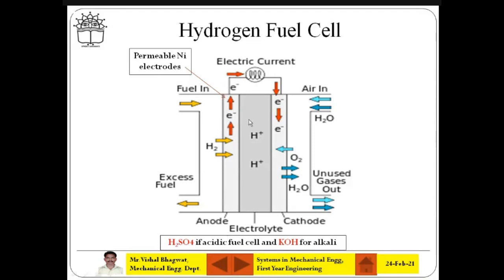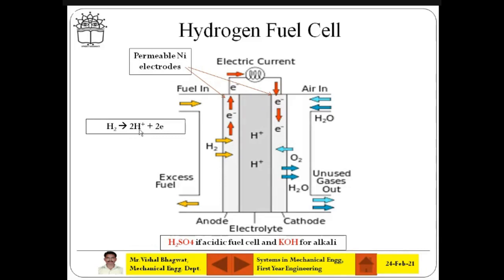On the anode side we pass the hydrogen gas — that is the fuel. On the cathode side we pass only oxygen or air. These two electrodes are porous — that is what permeable means. The anode reaction is: H2 → 2H⁺ ions + 2 electrons. For the cathodic reaction, as air is passed near the cathode, you get: ½O2 + H2O + 2e⁻ → 2OH⁻ (hydroxyl groups).